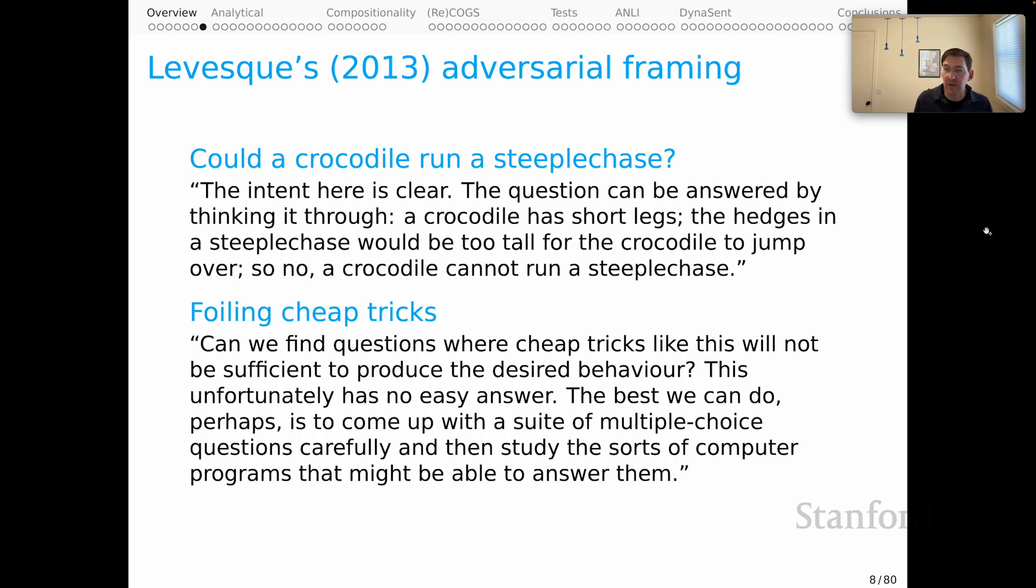And what Levesque was really after was what he called foiling cheap tricks. Can we find questions where cheap tricks like this will not be sufficient to produce the desired behavior? This unfortunately has no easy answer. The best we can do perhaps is to come up with a suite of multiple choice questions carefully and then study the sorts of computer programs that might be able to answer them. Again, what I hear in this early paper back in 2013 is a call for constructing adversarial datasets that will reveal much more about the solutions that our models have found.